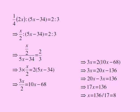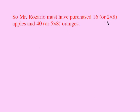So from here using algebra we can conclude that x is 8. Well if x is 8 we know Mr. Rosario bought 2x apples so he must have purchased 16 apples. We also know he bought 5x oranges. He must have purchased 40 oranges. So now this is the algebraic solution. These are our answers. Let's move on and look at the Singapore way.